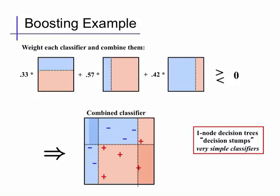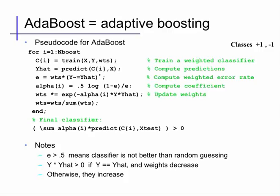In the end, each of these classifiers is assigned a weight, which we'll describe in a moment, and their weighted combination becomes an overall combined predictor. Since we're predicting plus or minus 1, we simply add up the weighted sum of the predictions and check its sign. If the sign of the weighted sum is positive, we predict +1; if the sign is negative, we predict -1. When we do this, we find that the combination of several extremely simple models — decision stumps — produces an overall decision region that is more complex than any single decision stump could have.